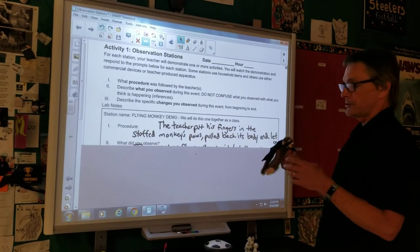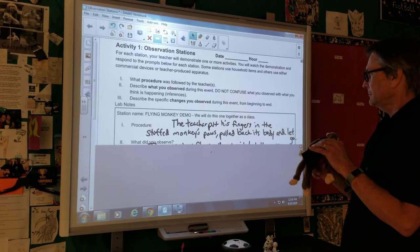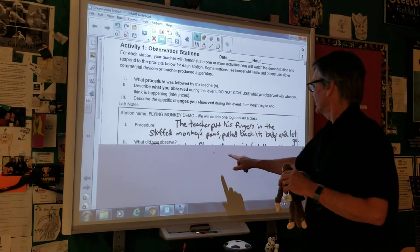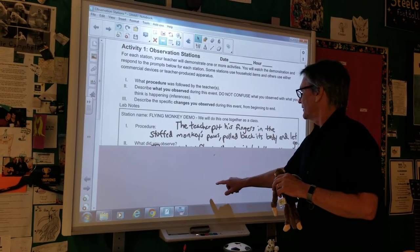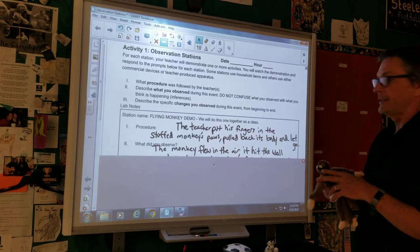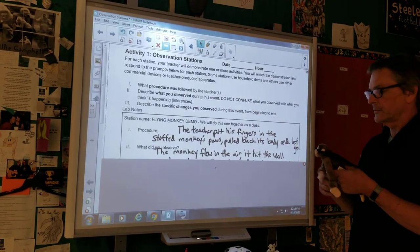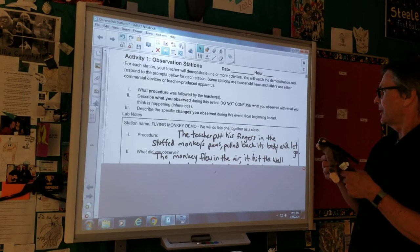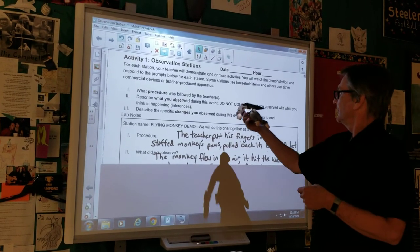Now, what did we observe? What did you observe? Well, the first thing that you're going to notice is that the monkey flew in the air, and hit the wall. And we're going to call the smart board the wall, just for the sake of it. So, the monkey flew in the air and hit the wall.